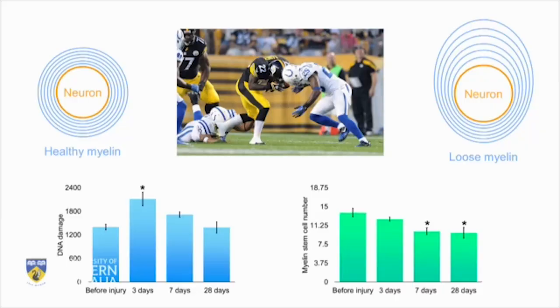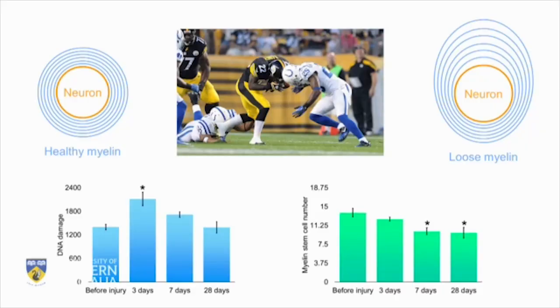The secondary phase is caused by masses of oxidants spreading from the initial injury site to the adjacent uninjured areas, damaging DNA and destroying structural proteins like those found in neurons and myelin. A key feature of this secondary phase is that the tight myelin wrapping around your neurons becomes loose, like the image on the top right.